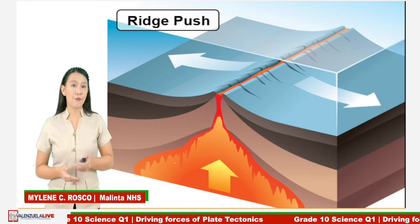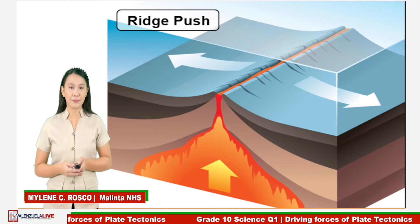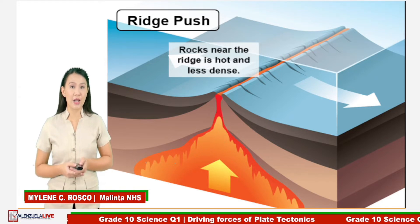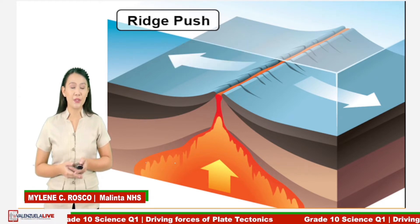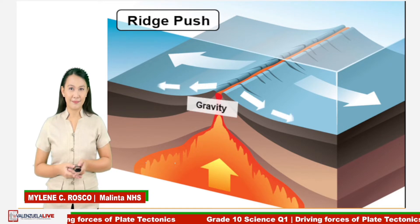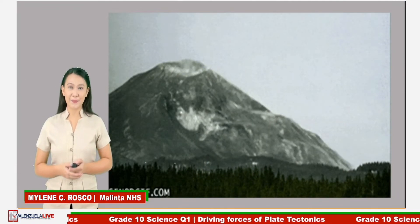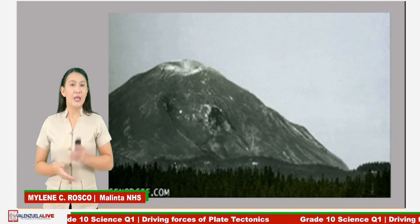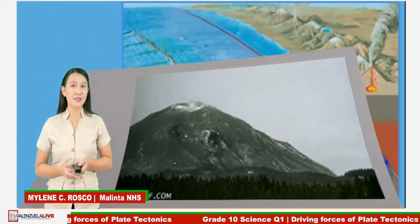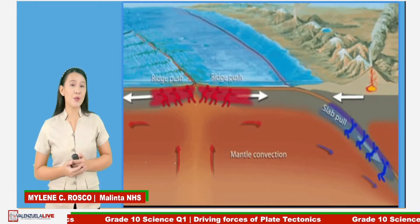However, as the newly formed rocks move away from the ridge, they become cooler, denser, and thicker. Gravity then causes this older, denser crust to slide away from the ridge and down the sloping crust, just like what happens in a landslide. And as the crust slides away from the ridge, it pushes the older, denser crust towards the subduction zones. And this is how ridge push works.